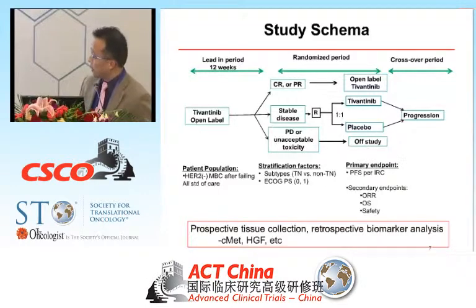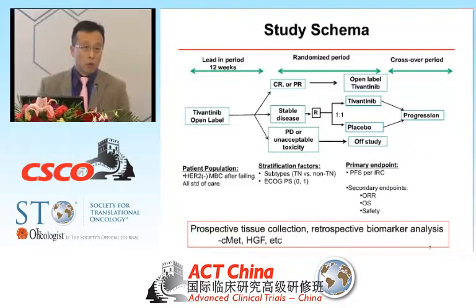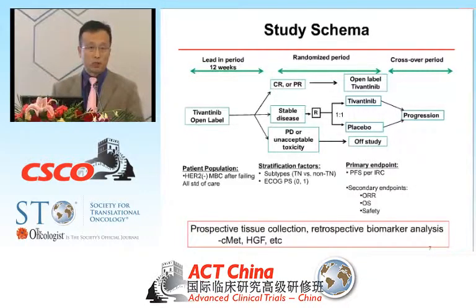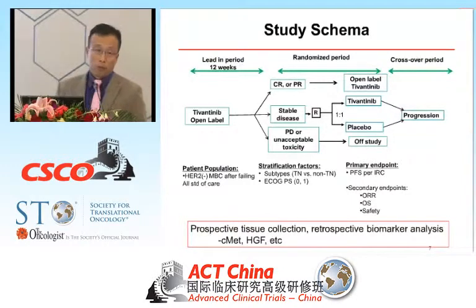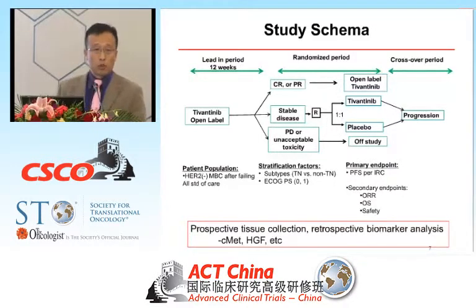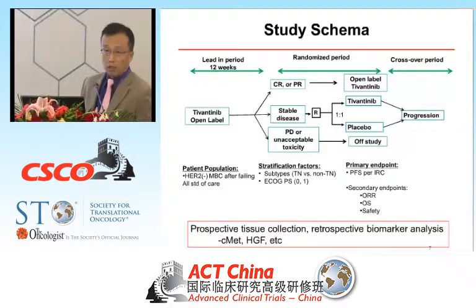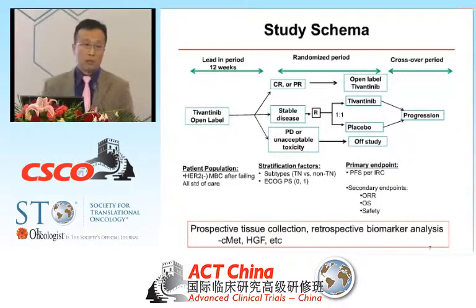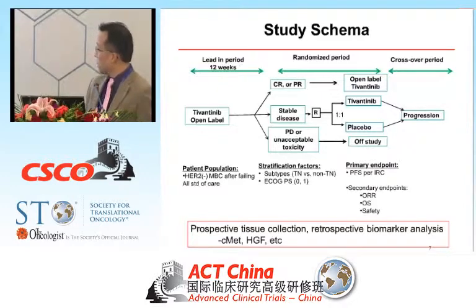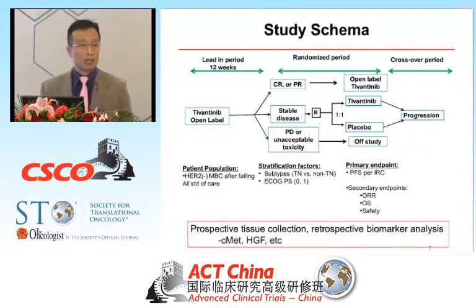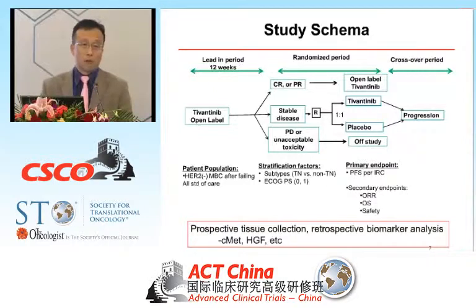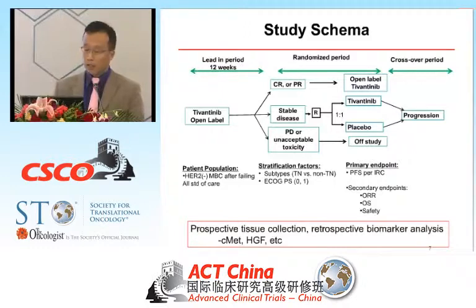The patient population we are targeting is HER2-normal, since HER2-positive patients have many available treatment options. For stratification factors, treatment activity — biology and treatment options — is an important factor, as is ECOG performance status. The primary endpoint is PFS, preferably assessed by an independent radiology review committee. We will also prospectively collect tissue from all patients, reserving the option to retrospectively analyze for biomarkers, with the lead candidates being C-MET and its ligand HGF.